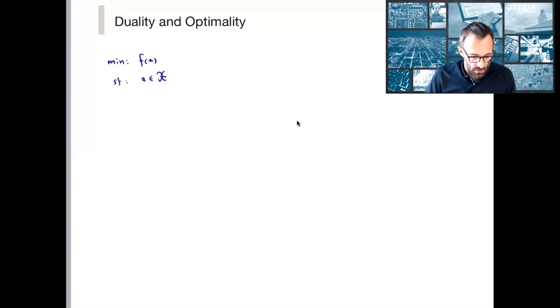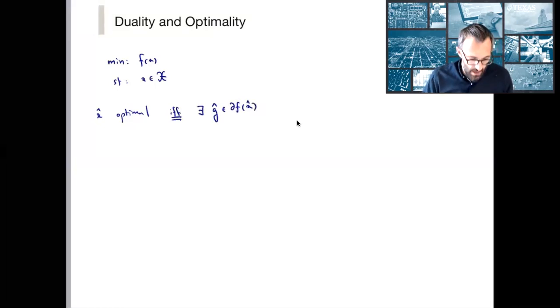Okay, so what do we know? We know that a particular point is optimal. Again, a feasible point is optimal if and only if there exists a subgradient, I'm going to call that g-hat, to match the x-hat, that belongs in the subdifferential of f at x-hat.